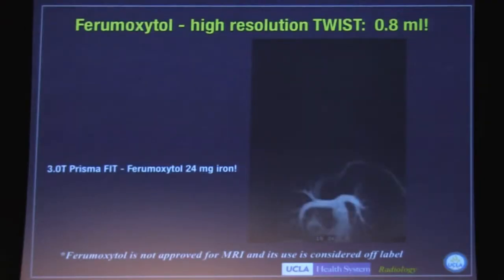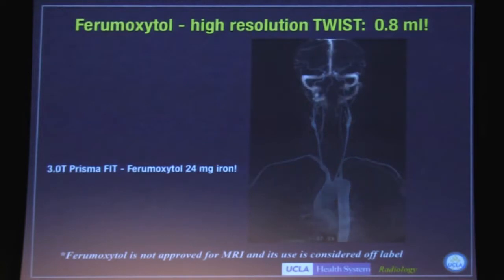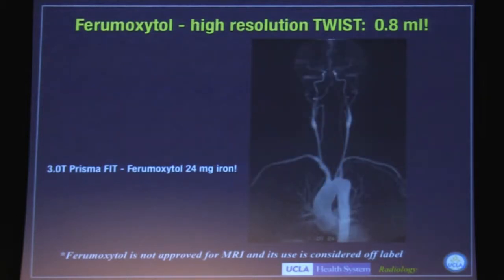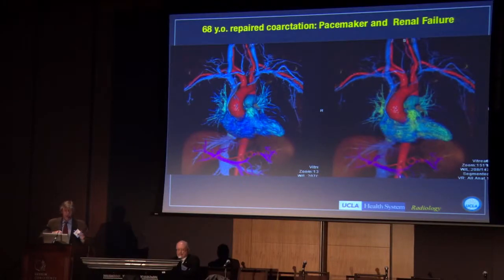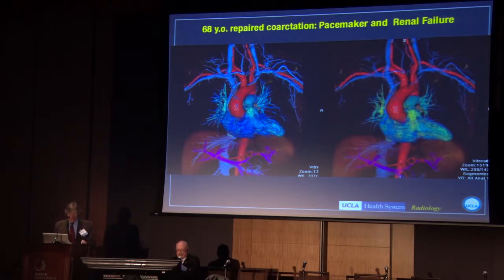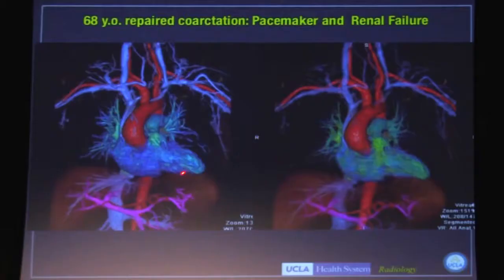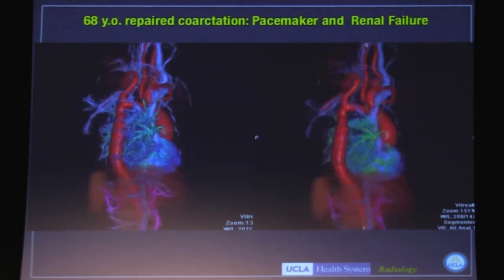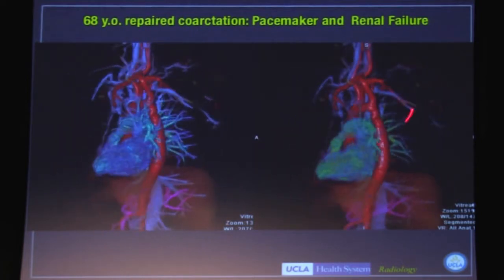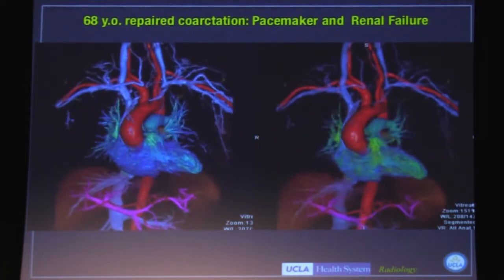Here we see dynamic first-pass imaging of normal thoracic and carotid arteries using basically 0.8 mLs of this agent — just 24 milligrams of iron, almost nothing. Here's a patient with a repaired coarctation who also had a pacemaker and renal failure. This agent enhances the entire blood pool, so as you can see on the left, you can see pretty much everything equally bright — systemic veins, systemic arteries, pulmonary arteries, pulmonary veins, portal vein. And with software, we can damp down some structures to highlight others.